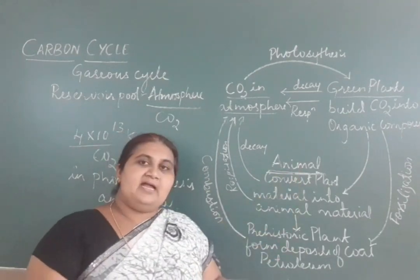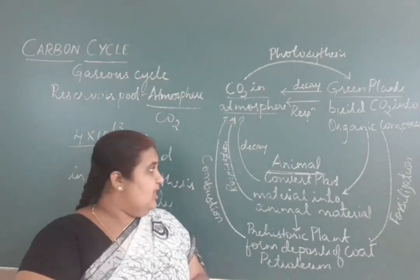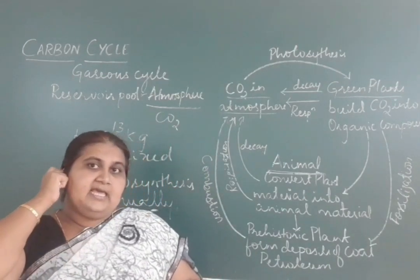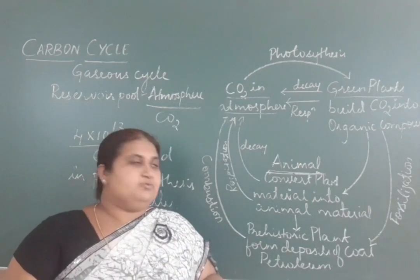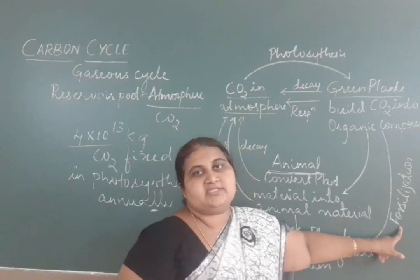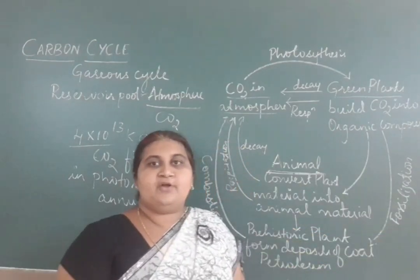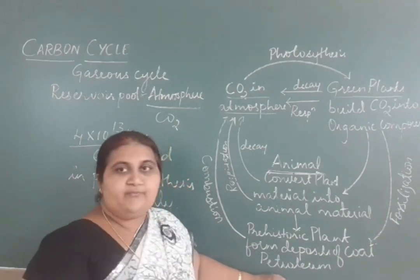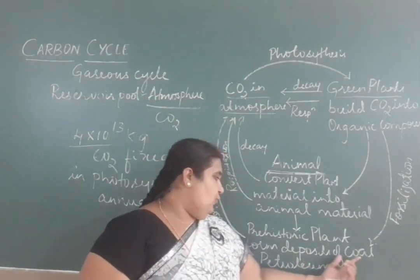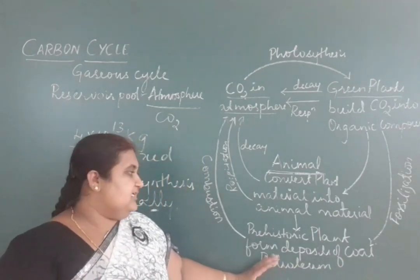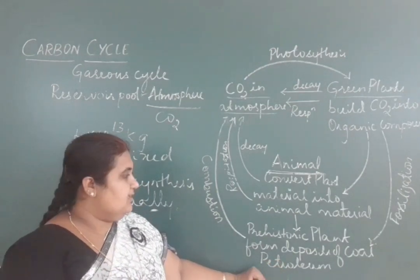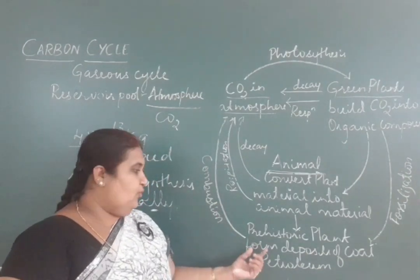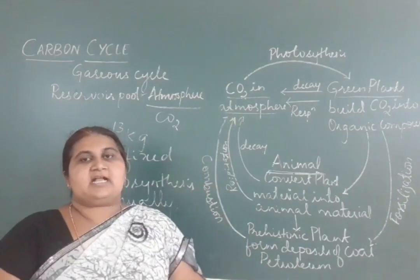When animals and plants die, some detritus escapes oxidation and is buried into the deeper layers, undergoing the process of fossilization. By fossilization, coal, petroleum, and natural gas are formed. By the combustion — the burning of these coal, natural gas, and petroleum — carbon dioxide is released back into the atmosphere.